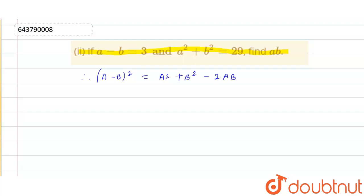So basically we have to find the value of this ab and we know the value of a square plus b square and a minus b.